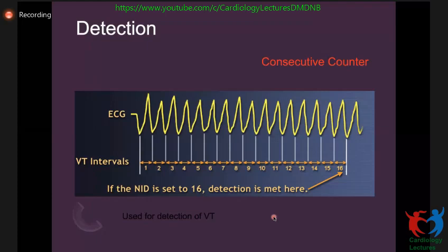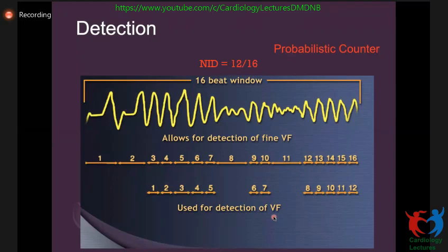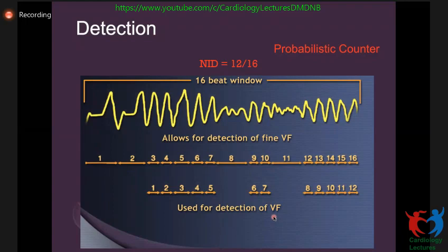This is a consecutive beats counter — 16 beats in a row come in fast and the detection criteria is met, then the device classifies it as VT or VF. For the probabilistic counter, you can program it at 12 of 16, 8 of 10, or 10 of 20 — counting through the window and if the required number of beats meet the fast rate criteria, it detects as VT or VF.